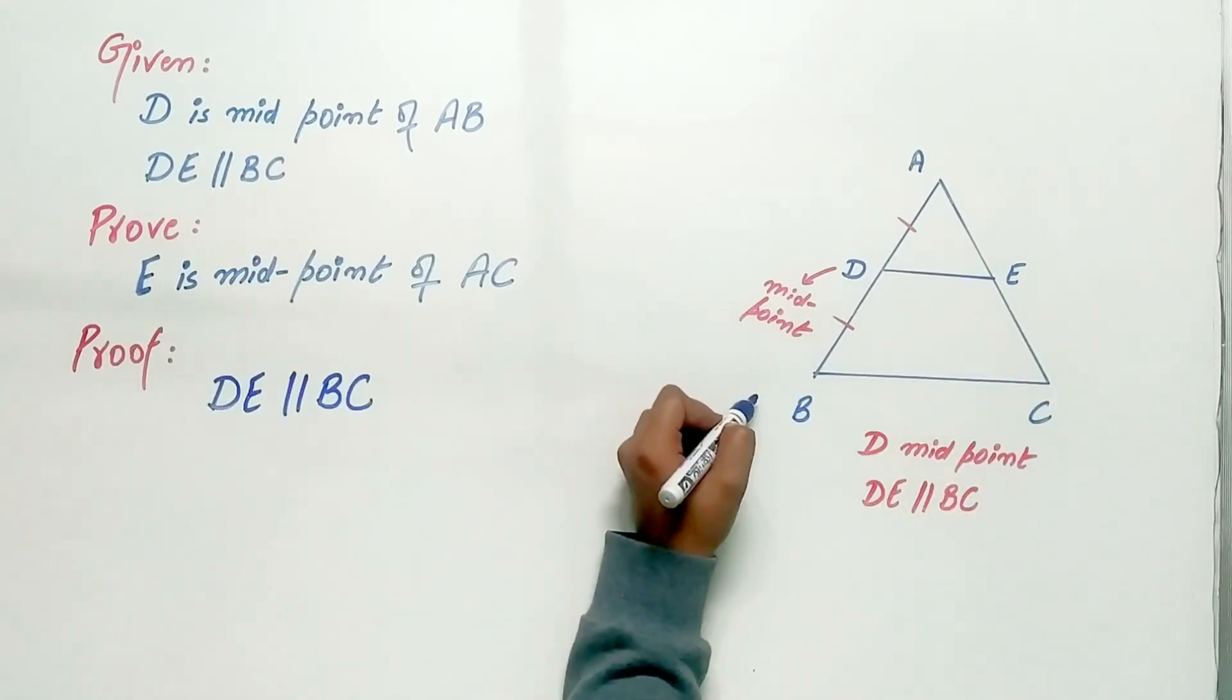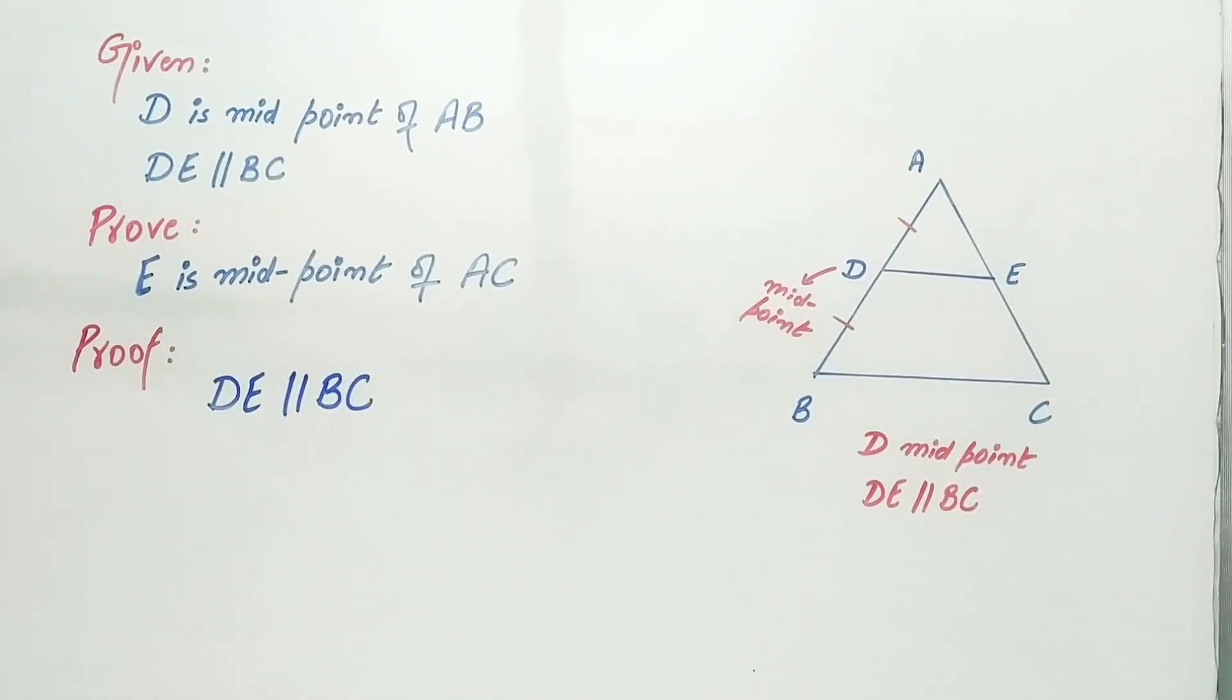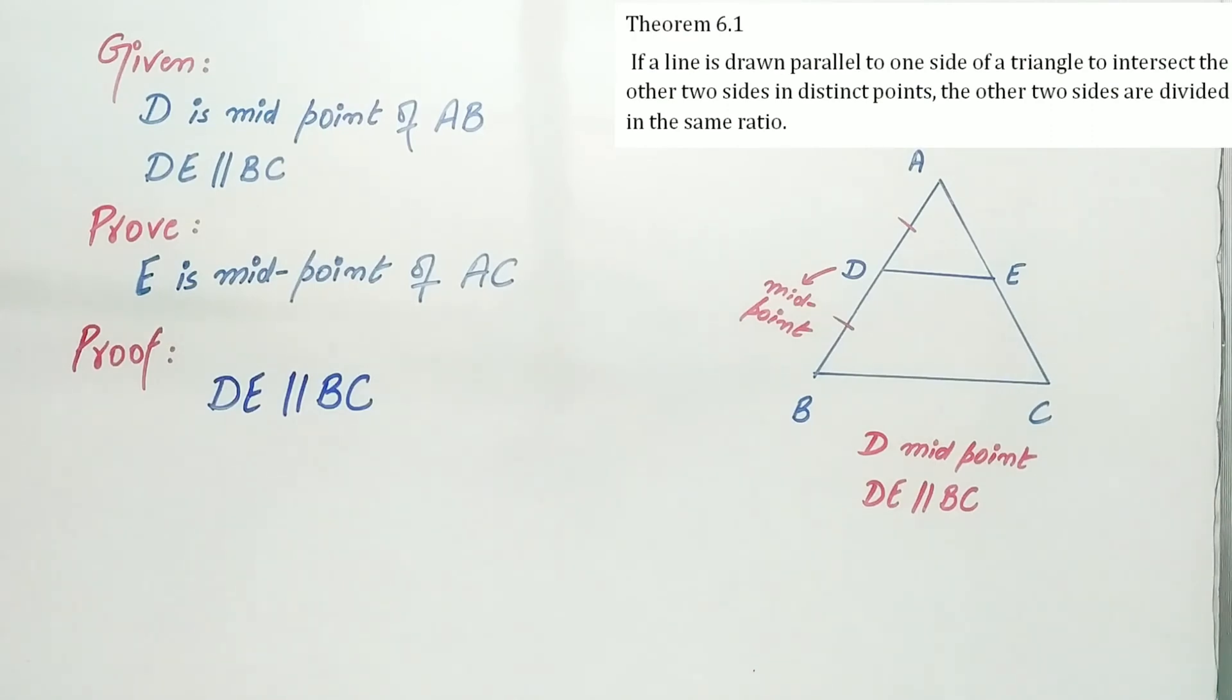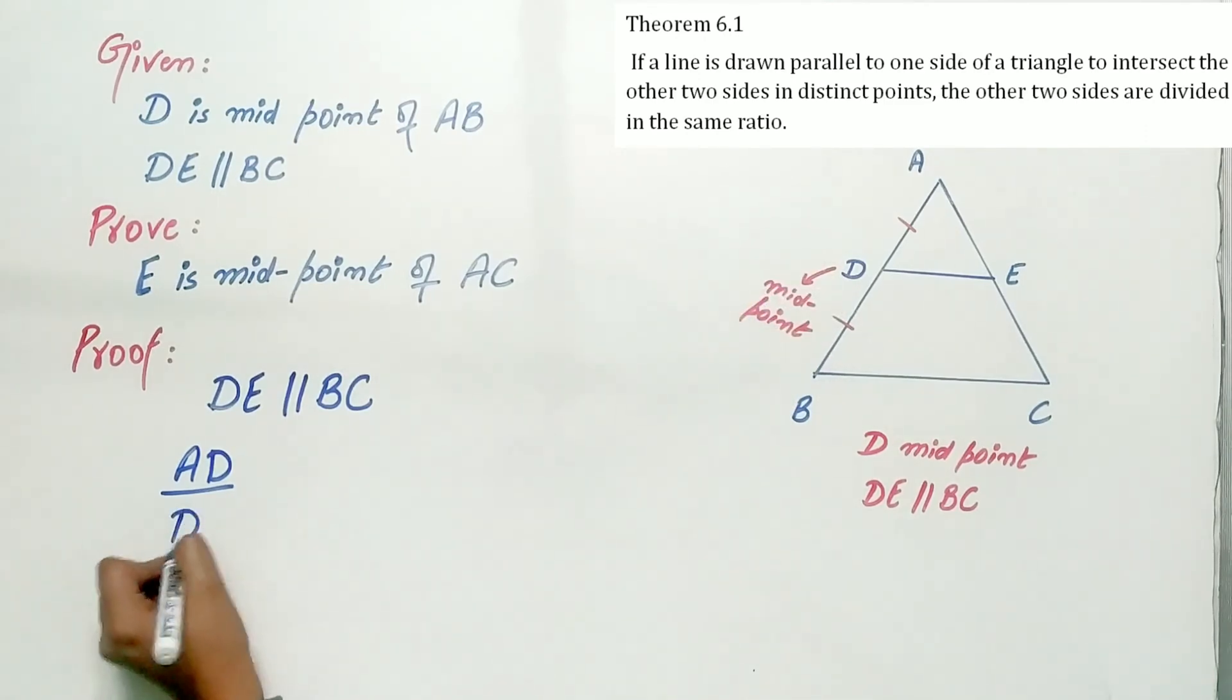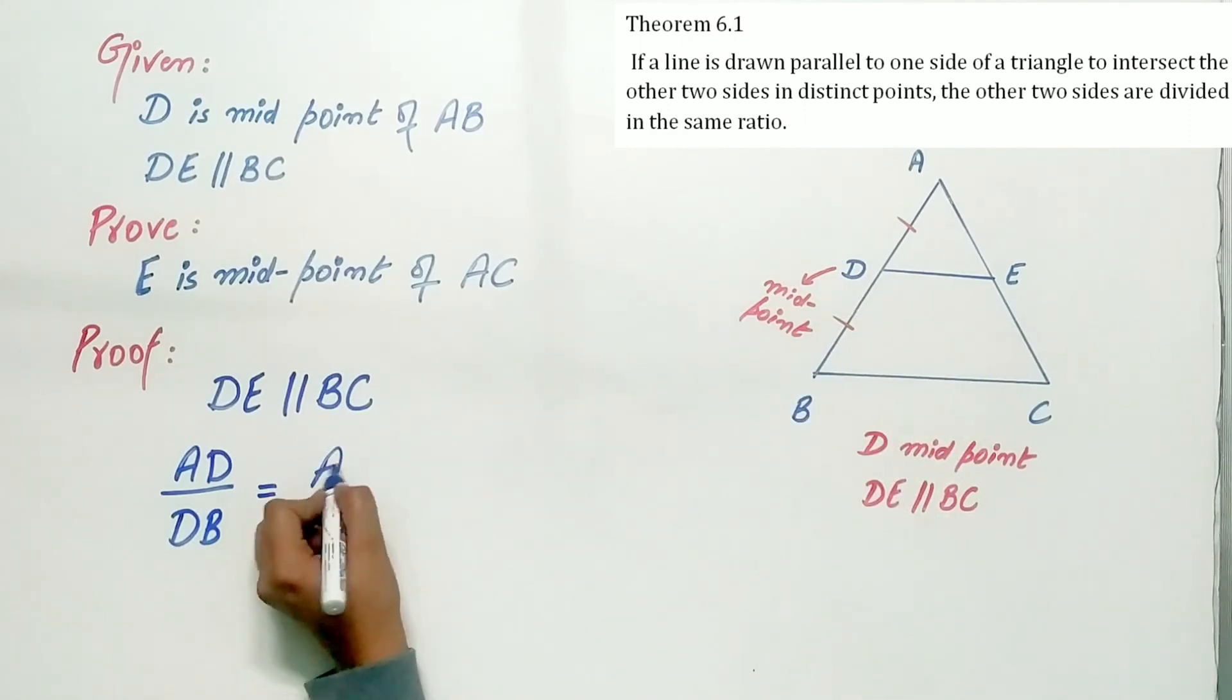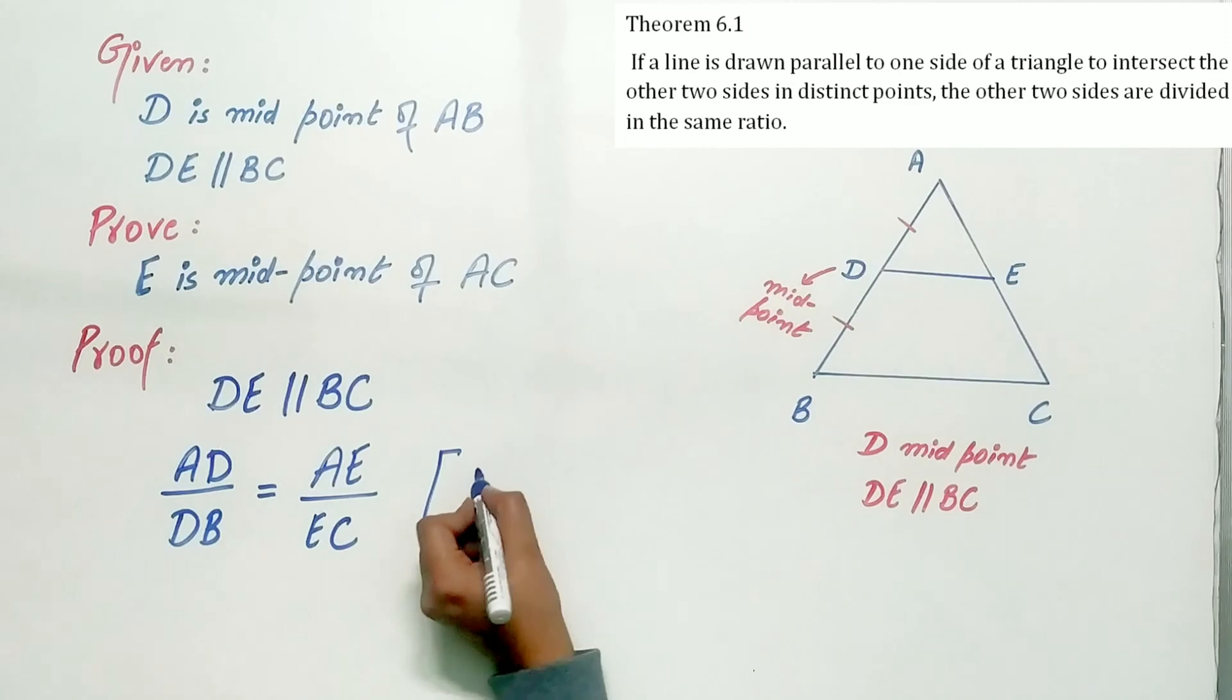DE is parallel to BC, that is given to us. Now, by theorem 6.1, AD by DB is equal to AE by EC via theorem 6.1.